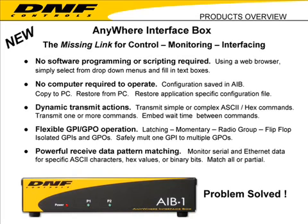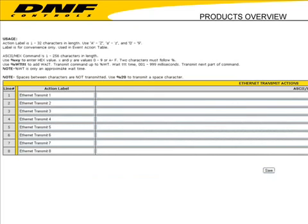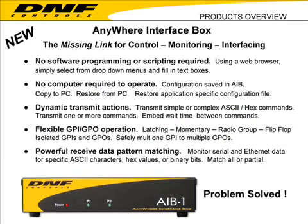You can configure the Anywhere Interface box to transmit simple or complex ASCII or HEX commands. You can create a command string up to 200 characters in length, embed a wait time so it sends part of the command string, waits a certain amount of time, then sends the rest. You can also stack multiple commands — it sends out the first command, waits a certain amount of time, then sends out the next command.